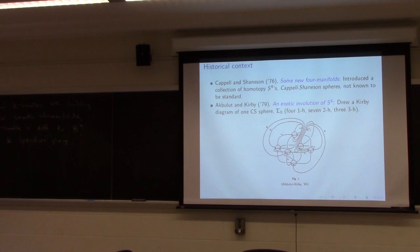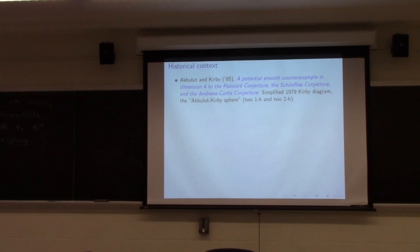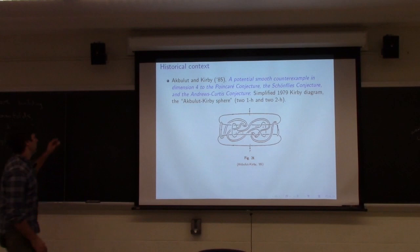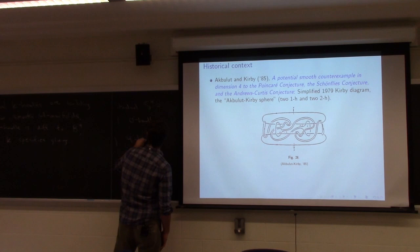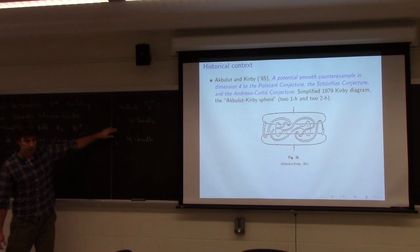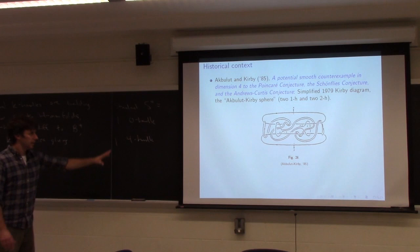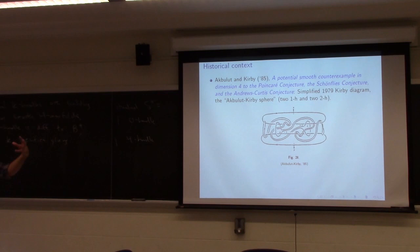Six years later they messed around with this handle decomposition a lot — just as with triangulations you can sometimes simplify. They were able to simplify down to two one-handles and two two-handles. The standard S4 can be built with just one zero-handle and one four-handle, so the goal of simplification is to cancel all the handles and see it's diffeomorphic to standard S4. They said this was a pretty good potential counterexample because they couldn't get any further.